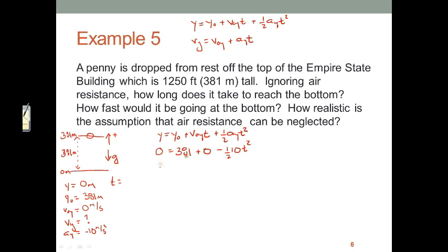Negative 381 equals 10 divided by 2 is 5, so that's negative 5 T squared. So T squared will equal 381 divided by 5, which is 76.2, which makes T equal to 8.7 seconds.